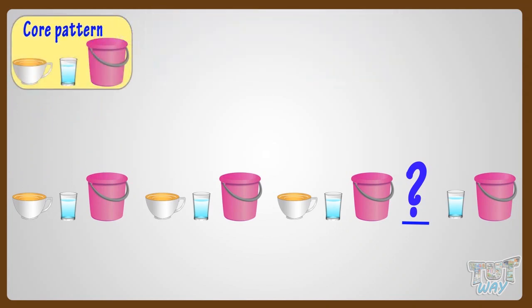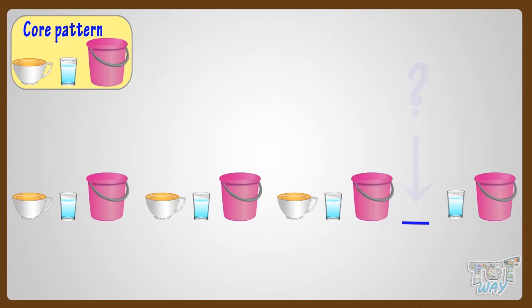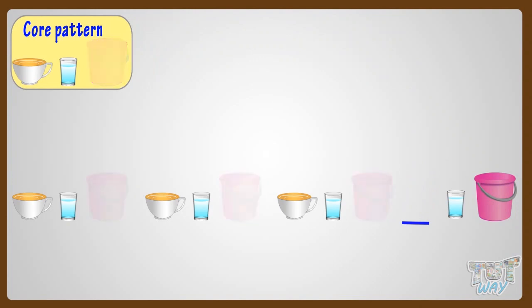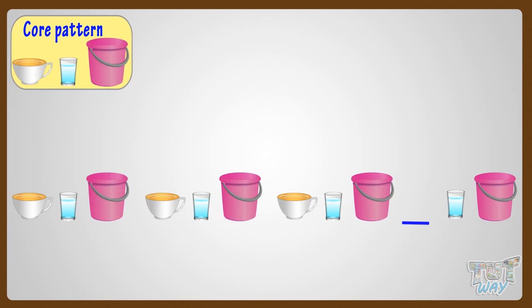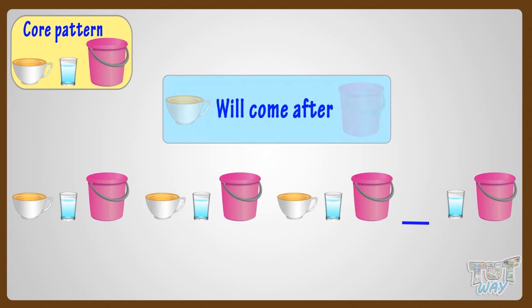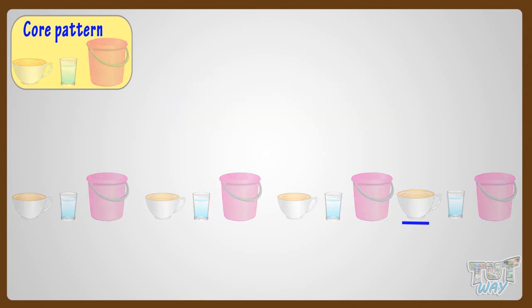Now we will find out what should come in the blank space to complete the pattern. From the core pattern, we see that after a bucket, we have to repeat the pattern. So a mug will come after the bucket, as the core pattern starts with a mug. We have completed the pattern.